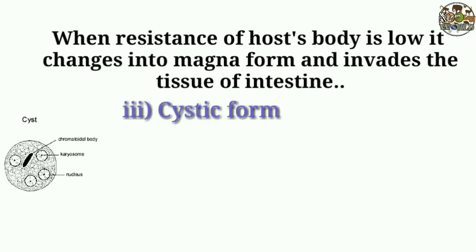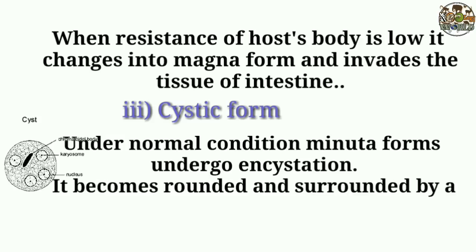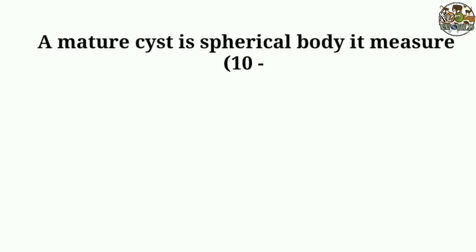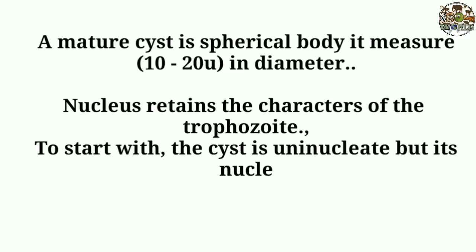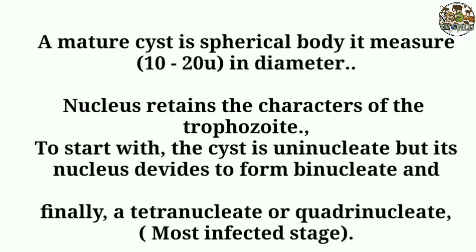Cystic form: under normal conditions, Minuta forms undergo encystation. They become rounded and surrounded by a thin, highly resistant and refractive cyst wall. A mature cyst is a spherical body, 10 to 12 μm in diameter. The nucleus retains the characters of the trophozoite. To start with, the cyst is uninucleate, but its nucleus divides to form binucleate, and finally a tetranucleate or quadrinucleate cyst. The tetranucleate or quadrinucleate stage is the most infective state.